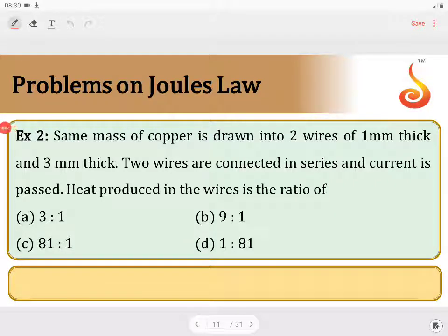Same mass of copper is drawn into two wires of 1 millimeter thick and 3 millimeter thick. Two wires are connected in series and current is passed. Heat produced in the wires is in the ratio.